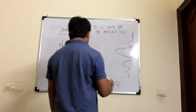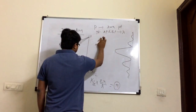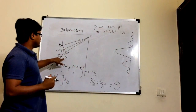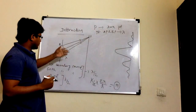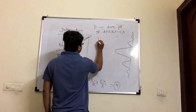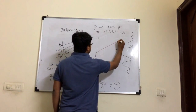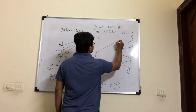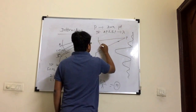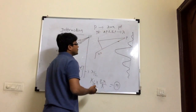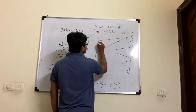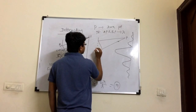Similarly, if the path difference is 2 lambda, you can show that P will again be a dark point. If the path difference is 2 lambda, you can divide the sources into 4 equal parts, each with a path difference of lambda by 2 between adjacent sections.